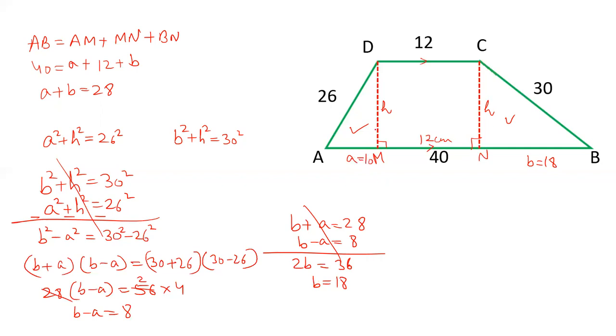And from this we can calculate the value of H square. So H square will be 26 square minus 10 square, 676 minus 100 is 576. So H is square root of 576 which is 24.